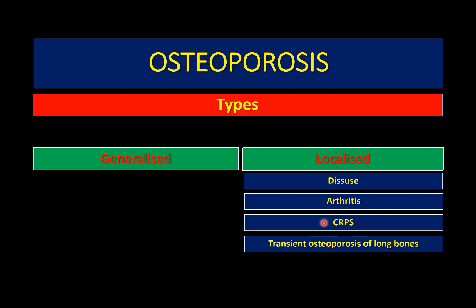Chronic relapsing pain syndrome, which happens post-trauma, is also called reflex sympathetic osteodystrophy, pseudox osteodystrophy, or causalgia. In this condition, a nerve is damaged and along its distribution there will be osteopenia. Transient osteoporosis of long bones, most commonly affecting the hip joint, is a transient osteopenia that resolves with time.